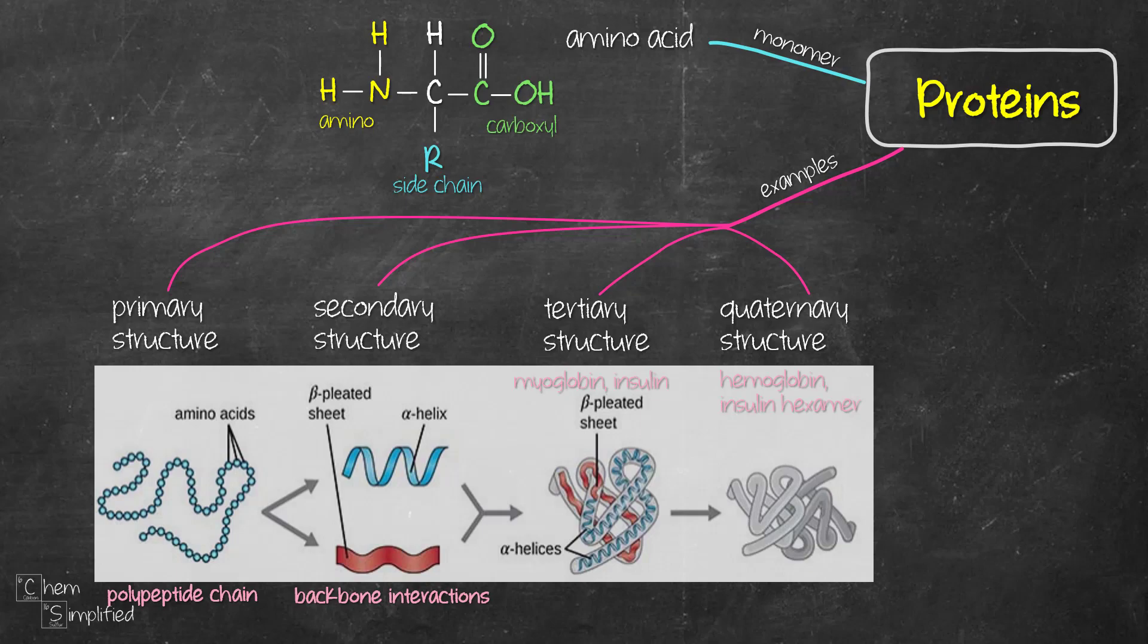And when the R groups of the amino acids interact with each other, then we get an overall 3D structure. That's the tertiary structure. So the difference between secondary and tertiary structure lies in the type of atoms that interacted with each other in the polypeptide chain. An example of the R group interaction is the disulfide bonds.